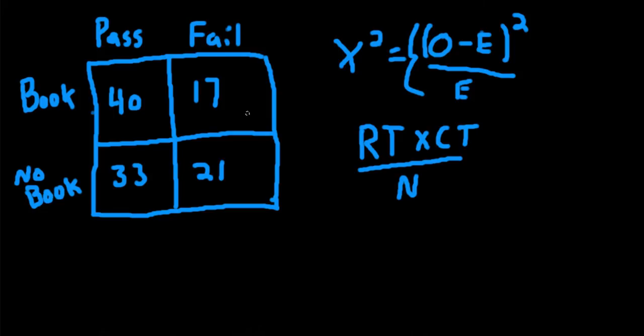So we'll get the row and column totals first. So we'll take the total number of people who own the book is 57. So that's the row total for the first row. For the second row, the total number of people who do not have the book is 54. The total number of people who passed the class is 73. And the number of people who failed the class is 38.